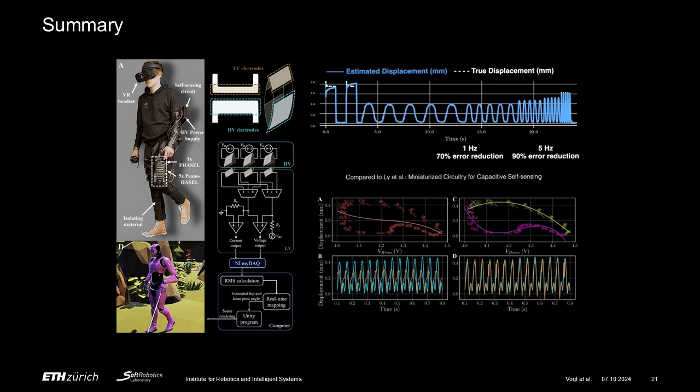Furthermore, we proposed a miniaturized circuitry that utilizes multiplexers to measure multiple F-HASEL actuators quasi-simultaneously using minimal additional components. Finally, we demonstrated an untethered and wearable application that uses miniaturized circuitry to both actuate and sense the displacement of multiple F-HASEL actuators to provide real-time motion capture of a VR user's hip and knee joint.